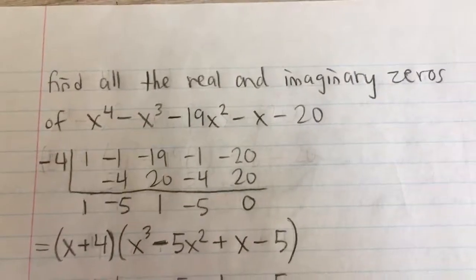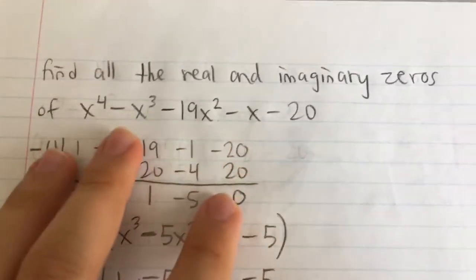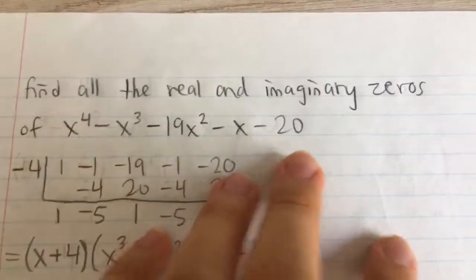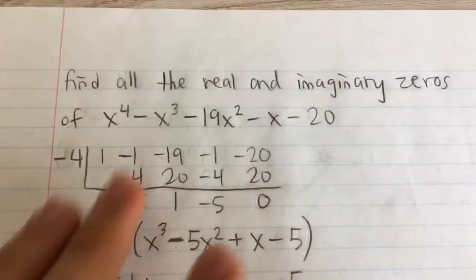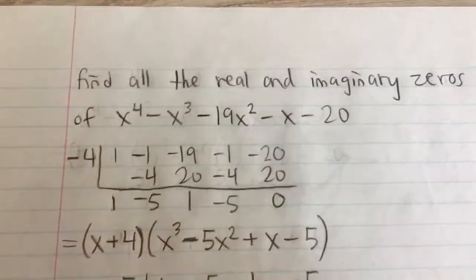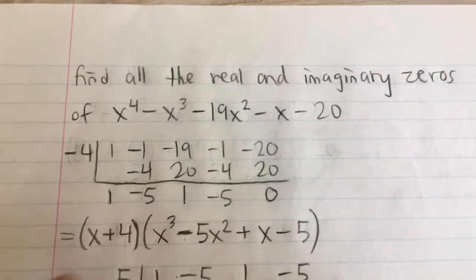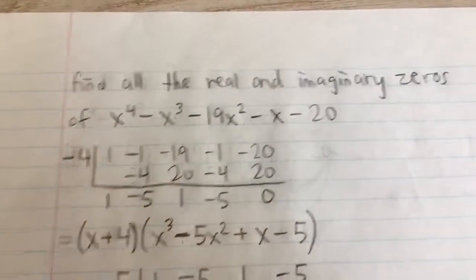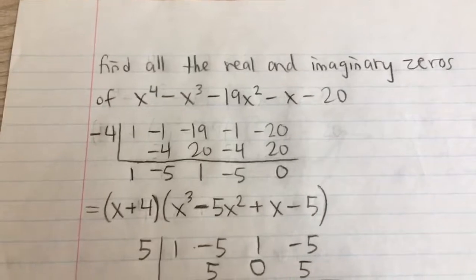Find all the real and imaginary zeros of this polynomial here. So in other words, if we had this equal to zero, what would be the values of x that would give us a solution? And so the first one, we have to test values to get just one solution to start us off.